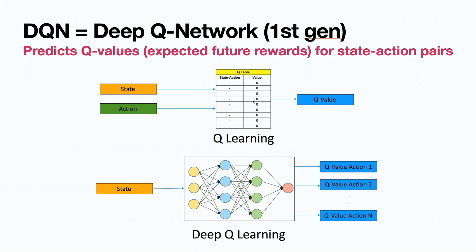So instead of writing everything into a huge table, we have a neural network where we put state and it returns us value for every state and every action. It's called deep Q-learning.